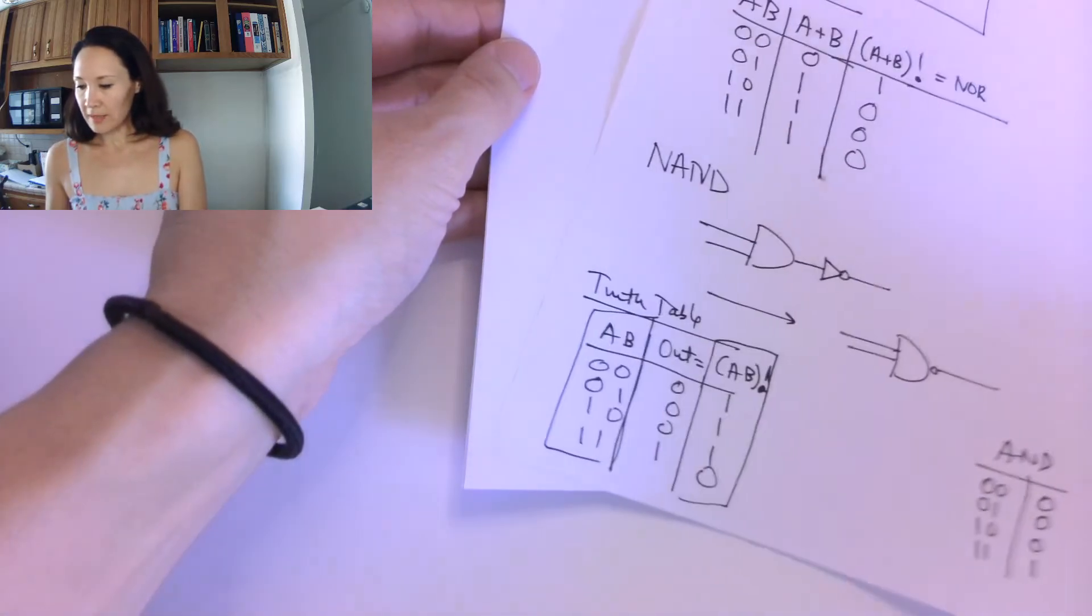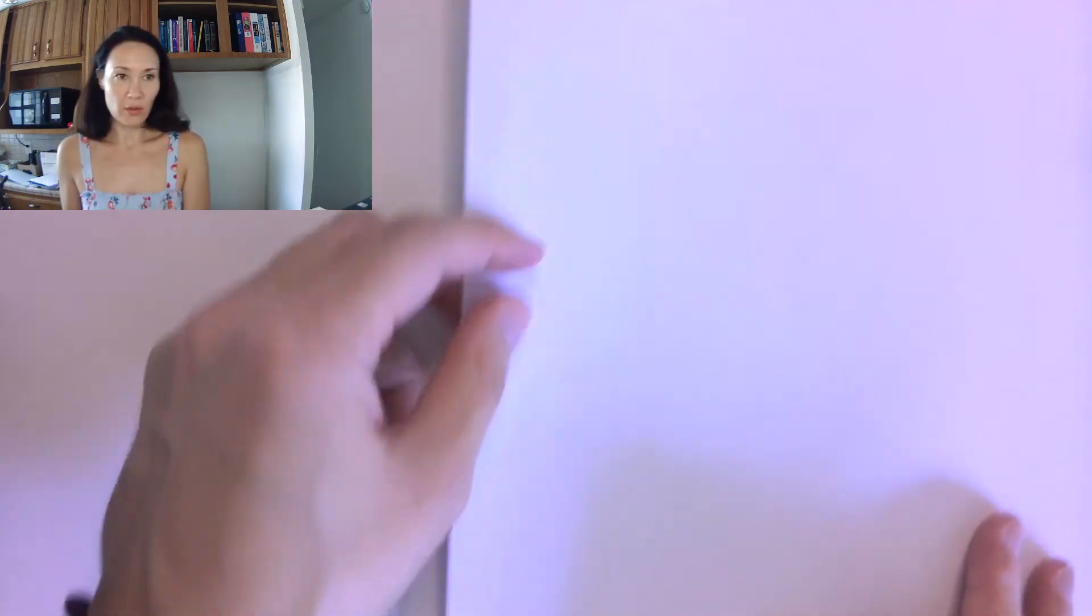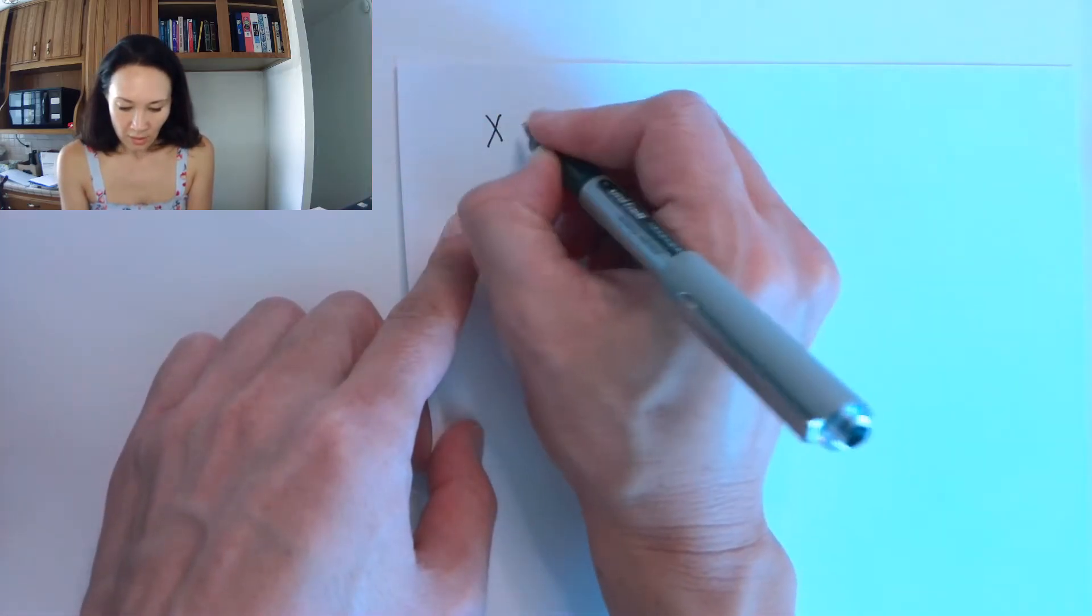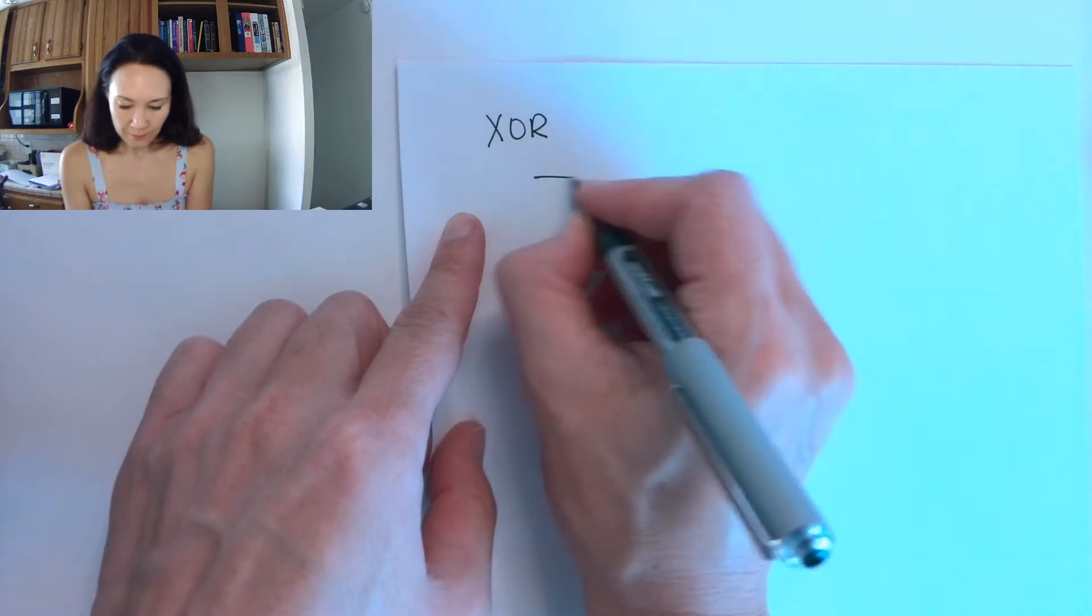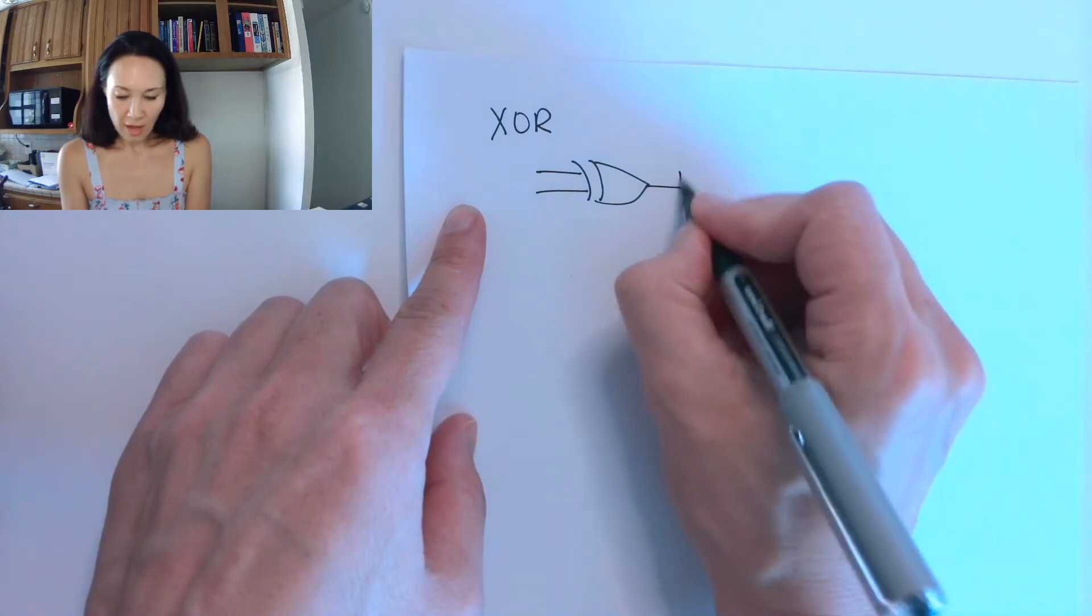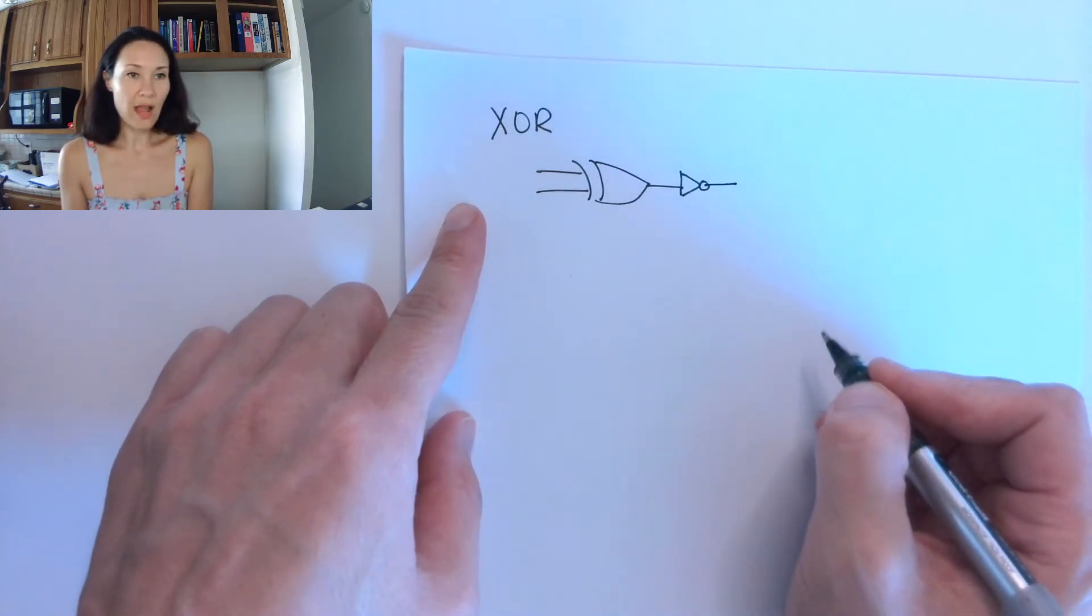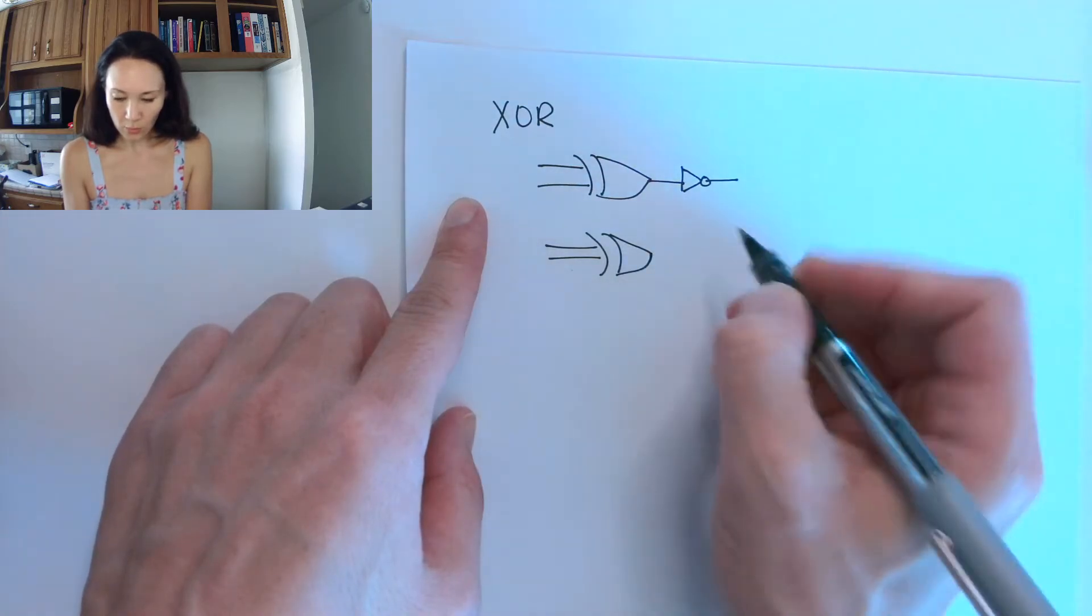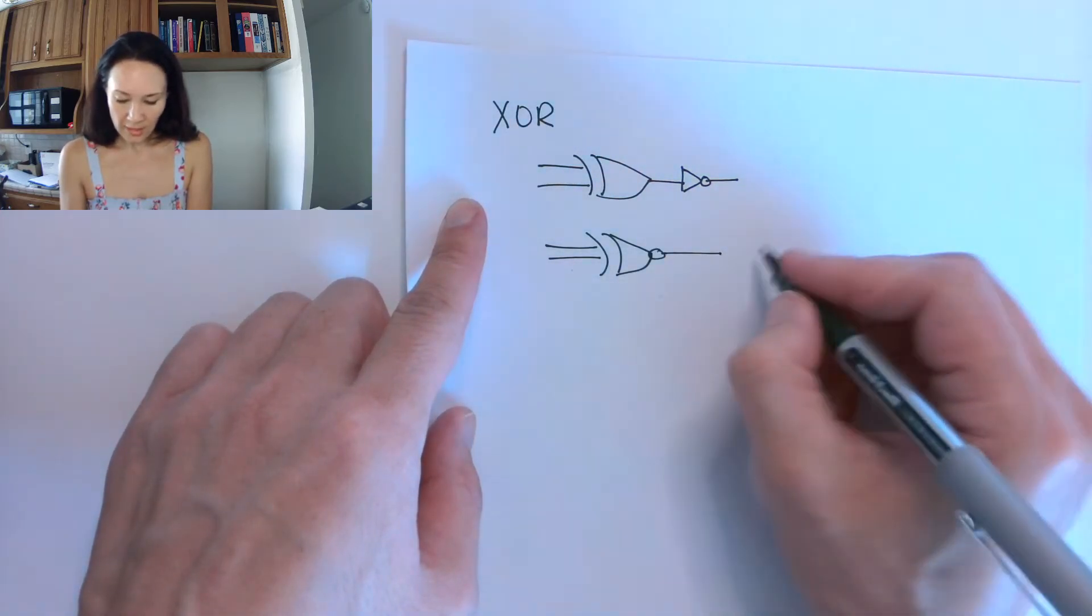The next basic gate that we can put an inverter on the end of is an XOR. Recall the XOR stood for exclusive OR. The gate looks like this. If we take our output and we invert our output, then we have what's called an XNOR gate. The XNOR gate looks like this.